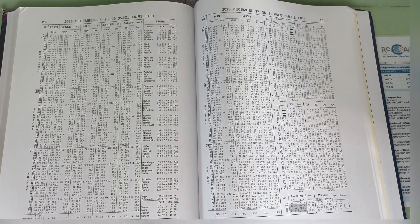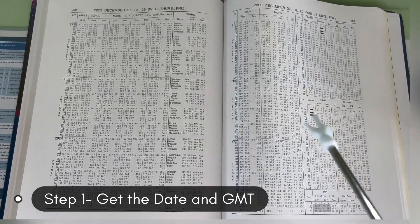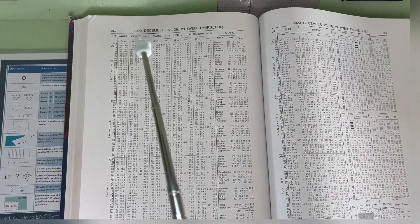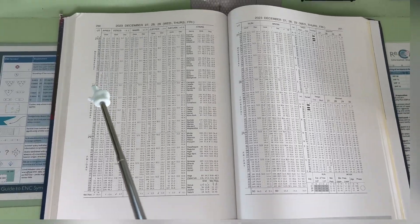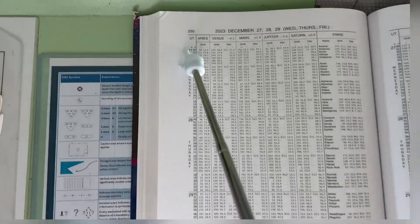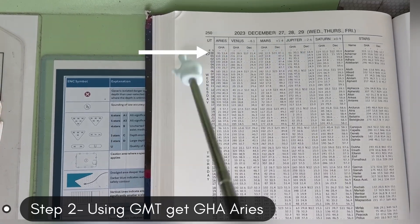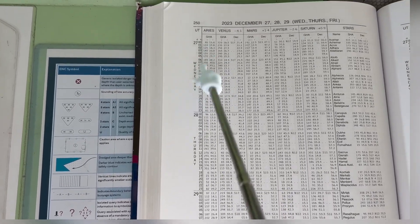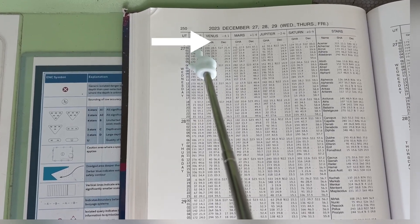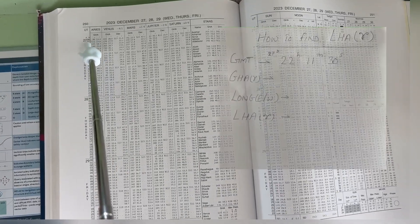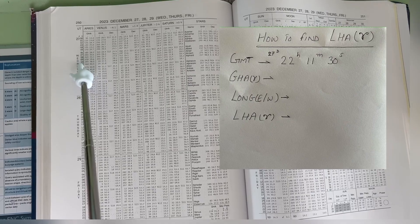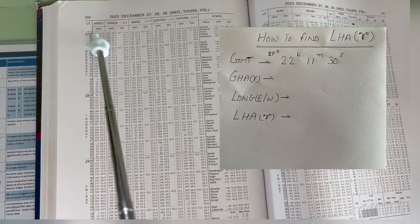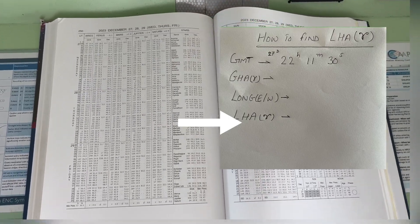For the calculation you need the GMT time and the date. Let's suppose today the date is the 27th — you can see December 27, 28, 29 in the almanac. You go to that date, and using the GMT you find the GHA Aries. Once you have the GHA Aries, you apply your longitude correction to find the LHA Aries. Using this LHA Aries, you then move to the other book — close the Nautical Almanac and take up the Air Navigation sight reduction book.